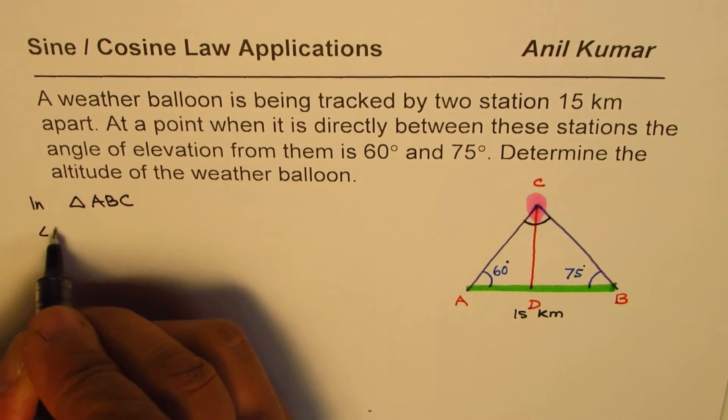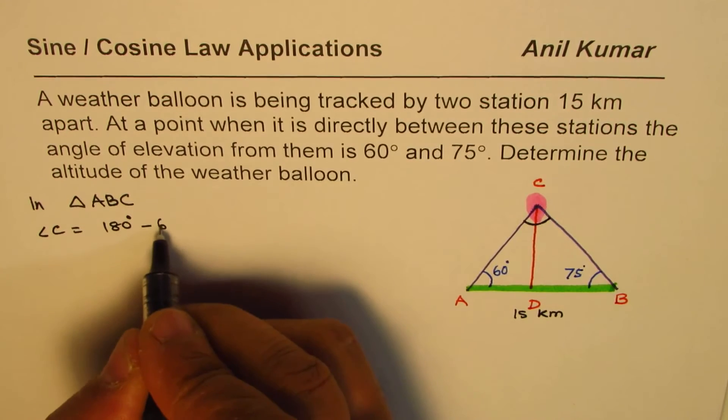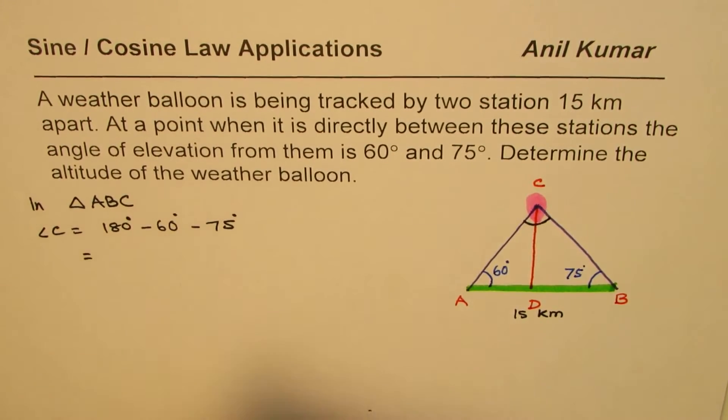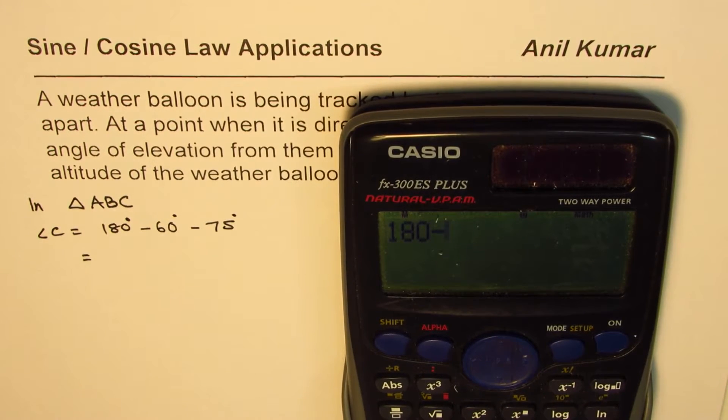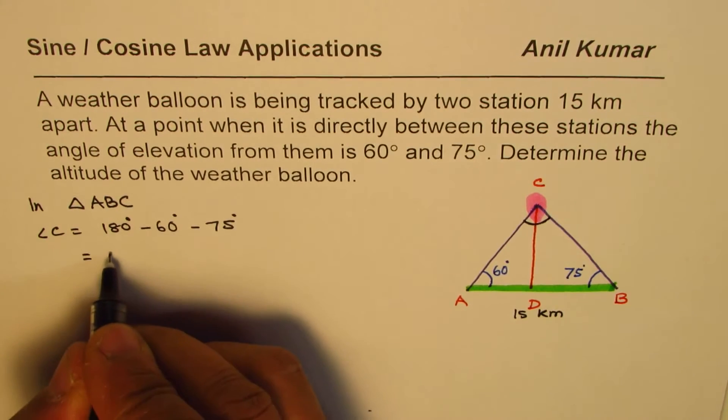So in triangle ABC, what is angle C? Angle C is equal to 180 degrees minus 60 degrees minus 75 degrees. So angle C is known to us. Let's calculate: 180 minus 60 minus 75, that gives us 45 degrees.